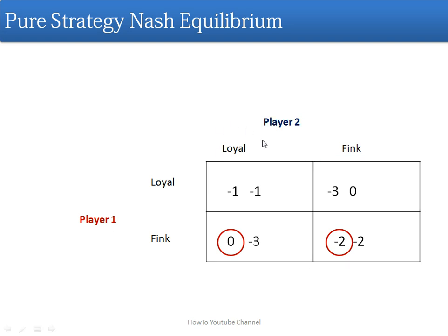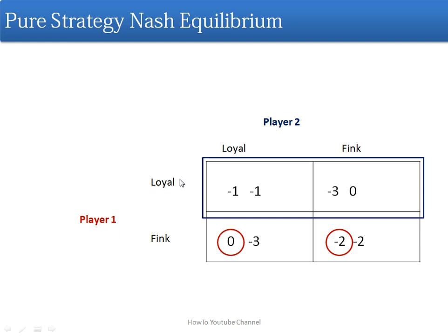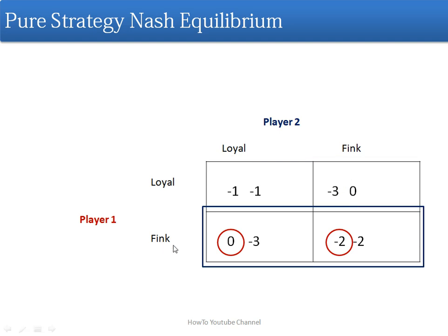Now we will see for player 2. If player 1 is playing loyal strategy, player 2 can either play loyal or fink. We will take their payoffs and compare them. For loyal, player 2 will get minus 1 payoff, and for fink, player 2 will get 0 payoff. So 0 is greater than minus 1, so player 2 will select fink.